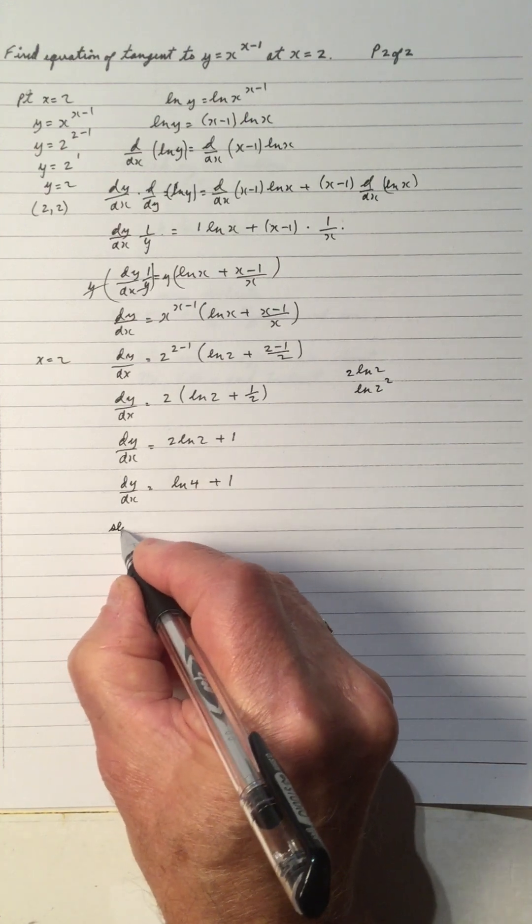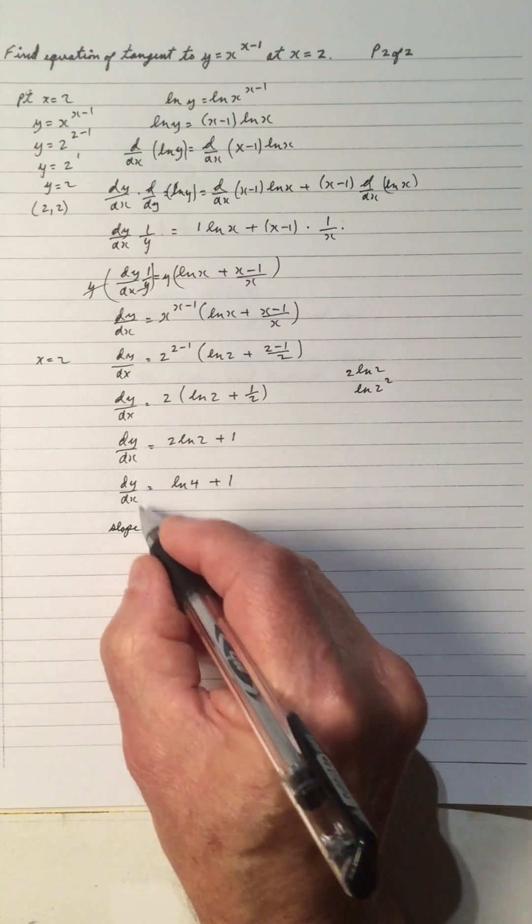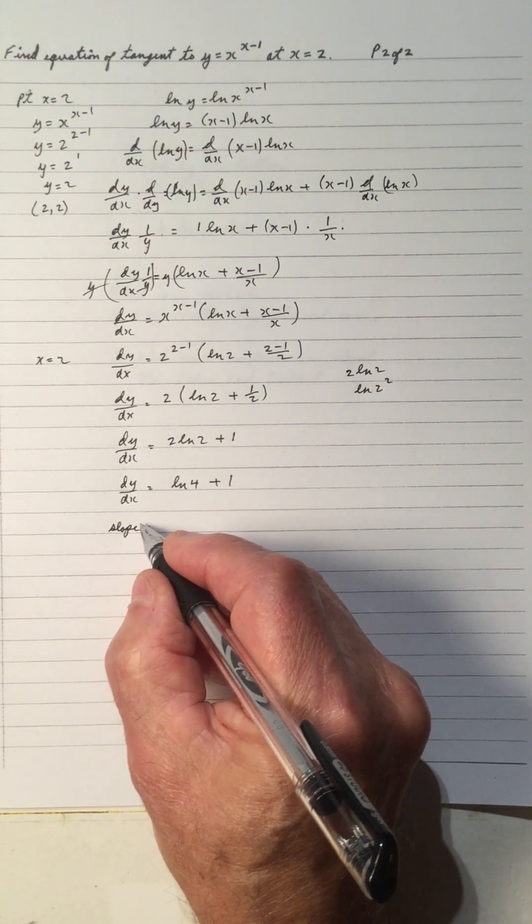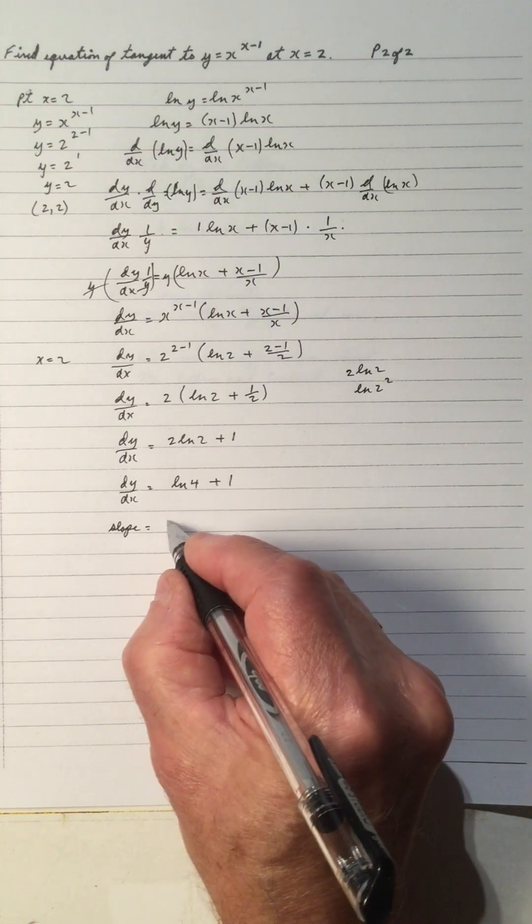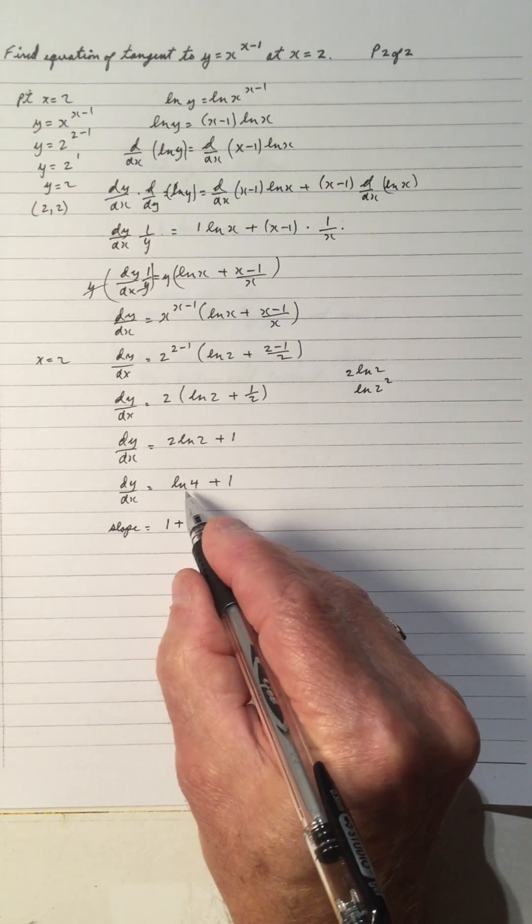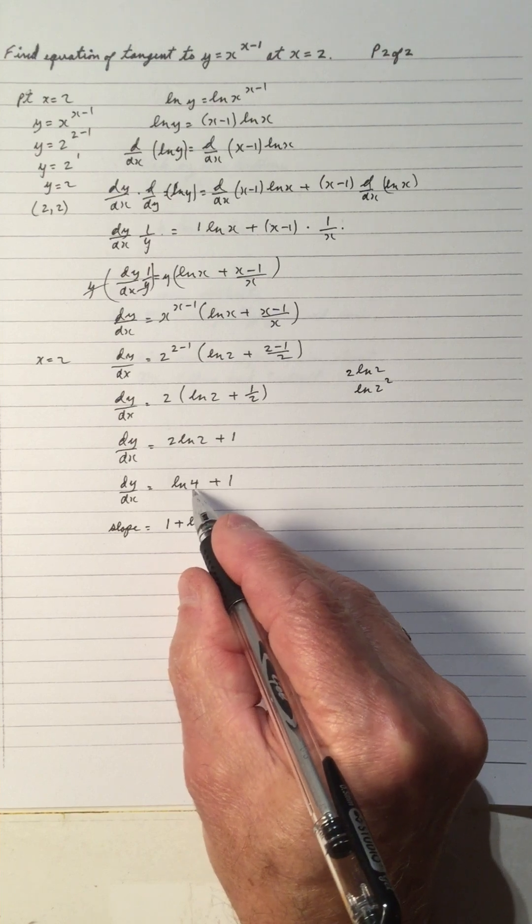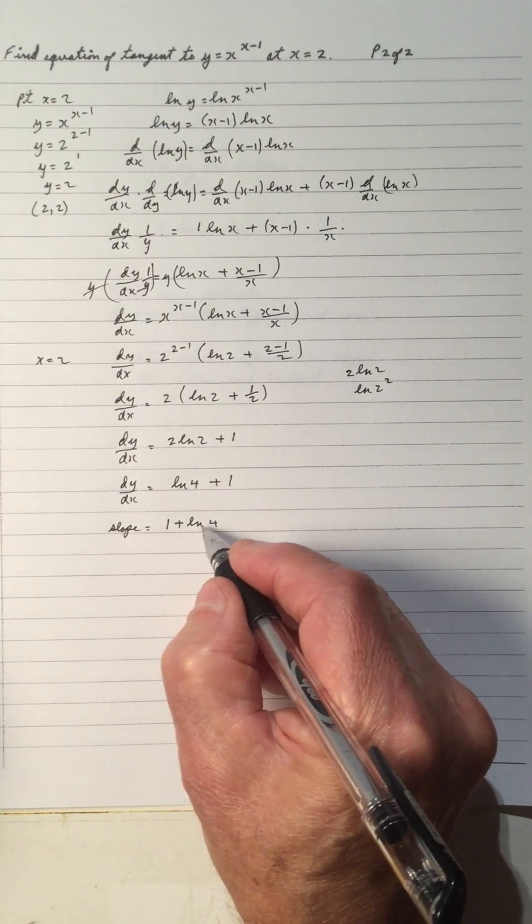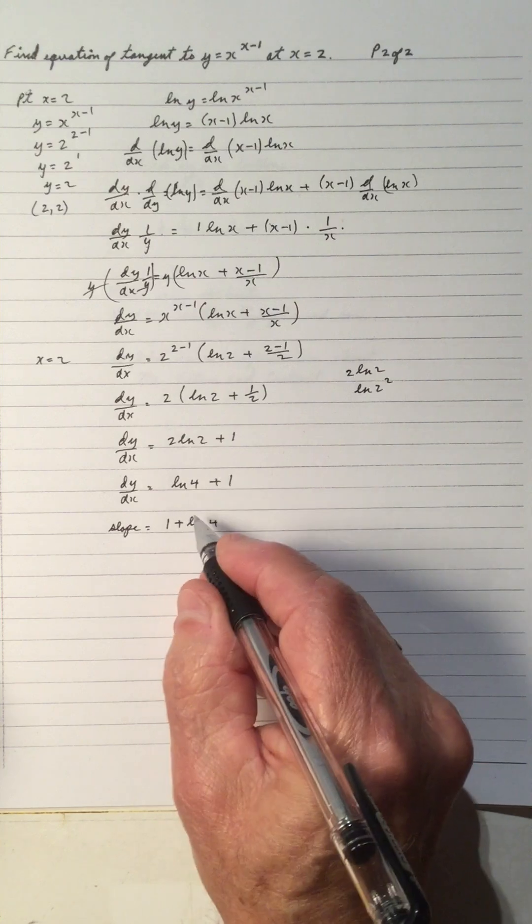And dy dx is the slope of the tangent at that point. And I like to put the 1 in front because this is the ln of 4, add on 1. So put the 1 in front. Doesn't look so confusing. So that's the slope.